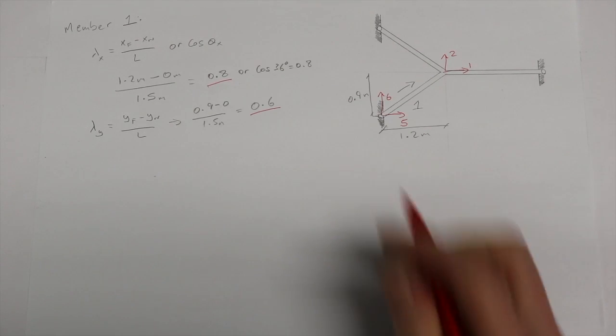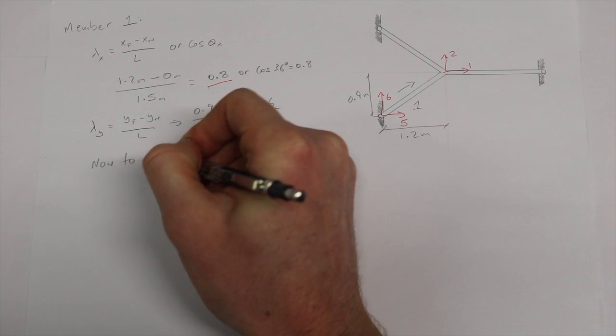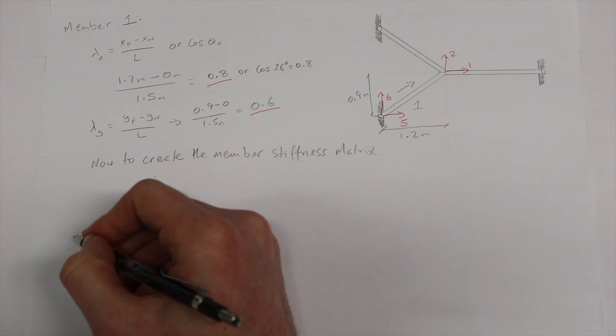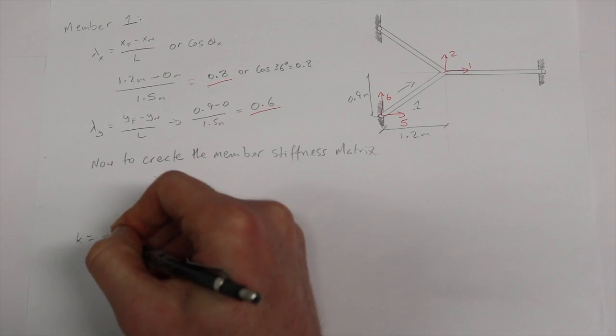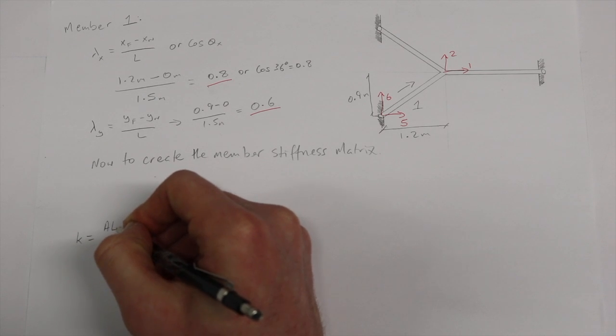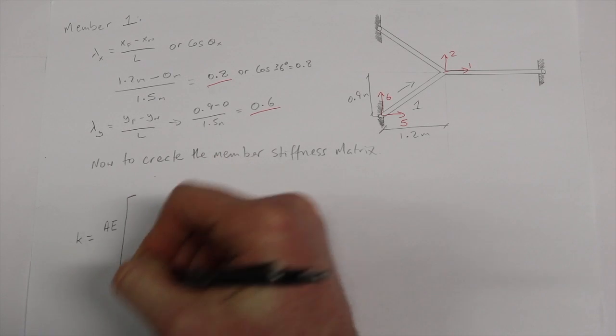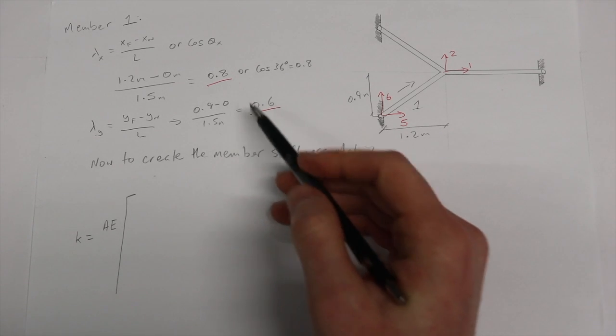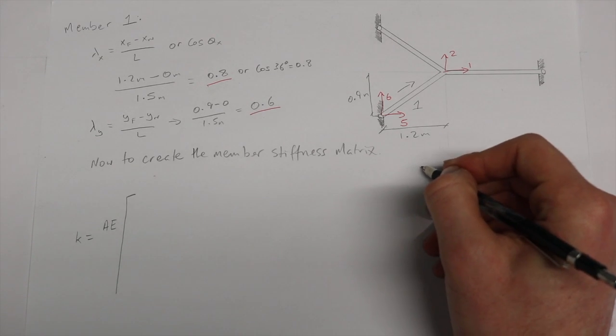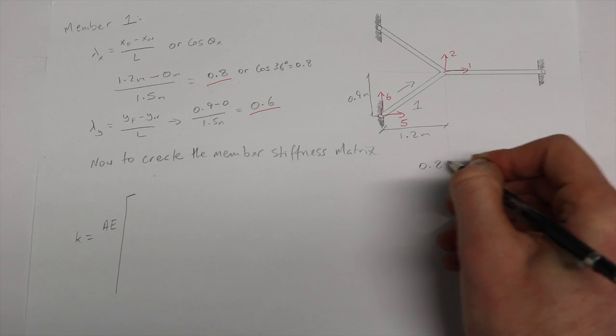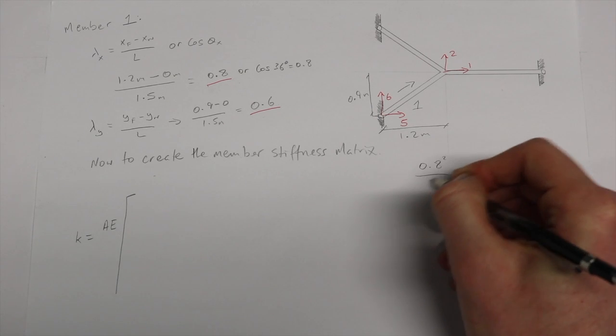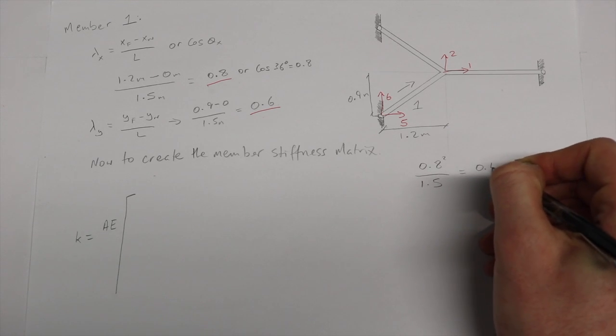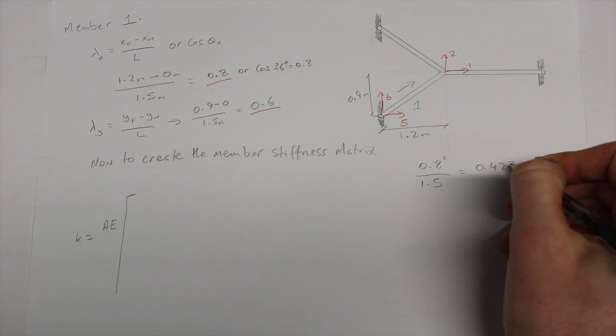We know from the formula that k is equal to AE over L, but we will incorporate L into our matrix by dividing our lambdas over L. Our first value in row one, column one is lambda x squared. So we have 0.8 squared divided by the length 1.5, which gives us 0.427.